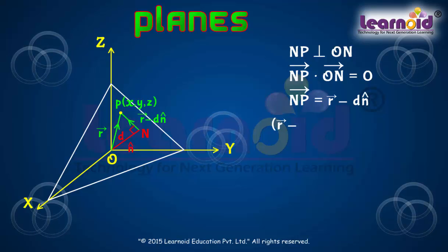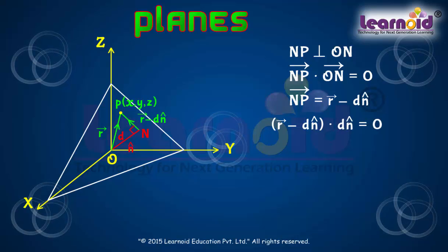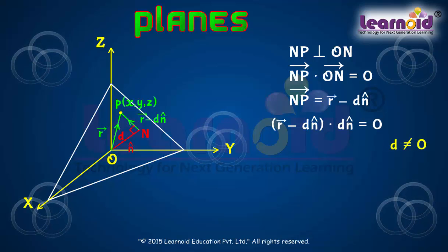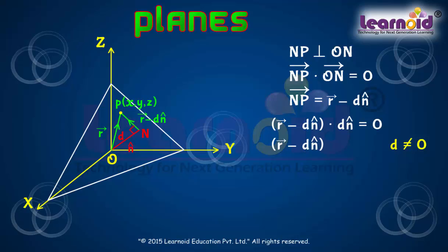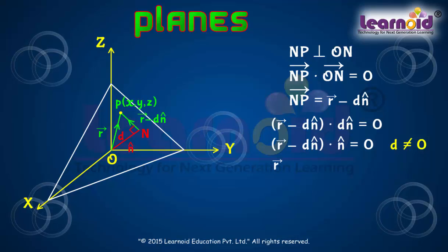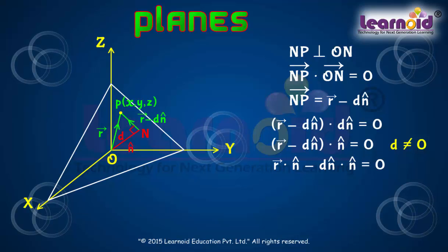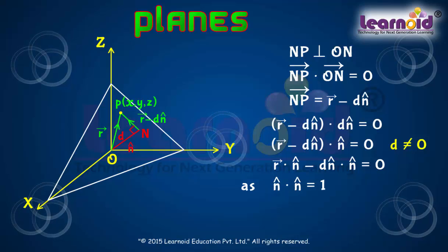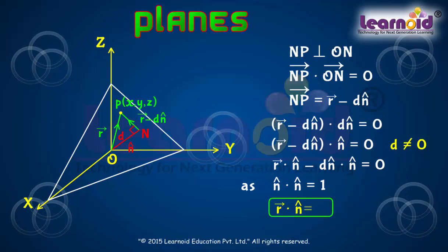So NP dot ON is equal to 0. NP vector is equal to R vector minus D·N-cap. Therefore, (R minus D·N-cap) dot D·N-cap is equal to 0. Or, because D is not equal to 0, we divide the equation by D to get R vector minus D dot N-cap, dot N-cap, is equal to 0. Or, R dot N-cap minus D times (N-cap dot N-cap) is equal to 0. As N-cap dot N-cap is equal to 1, we finally get R vector dot N-cap is equal to D.